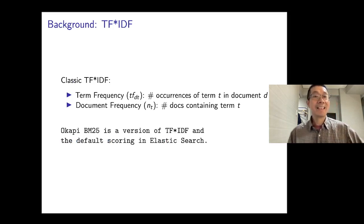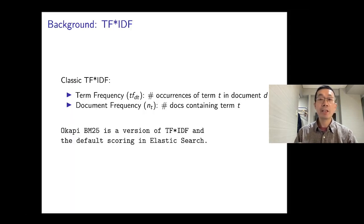Classic TFIDF. This is widely used. I assume everyone is aware of what it is. There are two parts of TFIDF. The term frequency, TFDT, which is the number of occurrences of term T in document D. And then there is the document frequency, NT, which is the number of documents containing term T.